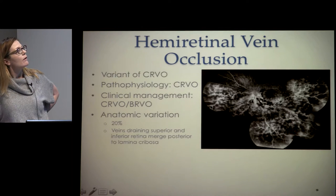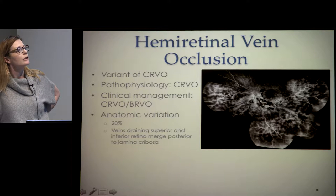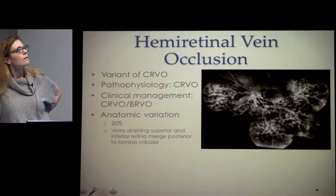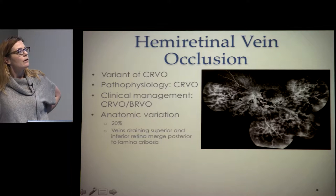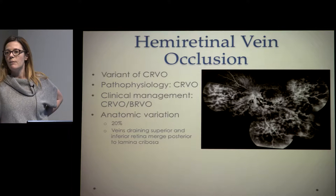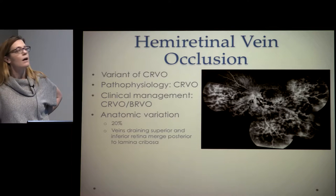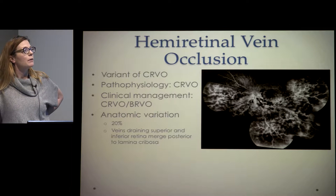Here's a photograph of a hemiretinal vein occlusion. It's more severe than a branch vein occlusion — you can see that one area of the retina is spared while a large area is involved. We actually classify it more as a central retinal vein occlusion and manage it as a combination of both. It's pretty uncommon to see a hemiretinal vein occlusion, but they're out there.